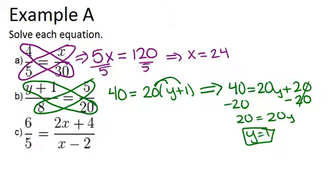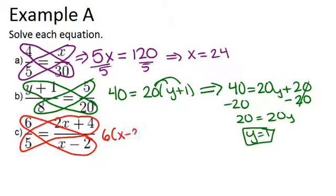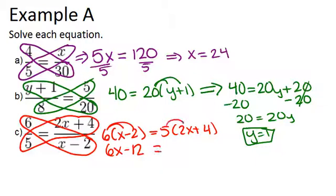In part C, it's the same thing. We can cross-multiply to solve this. And don't forget to distribute when you have more than one term in something that you're multiplying. So we're going to do 6 times x minus 2 equals 5 times 2x plus 4. So we're going to distribute on both sides this time. 6x minus 12 equals 10x plus 20.